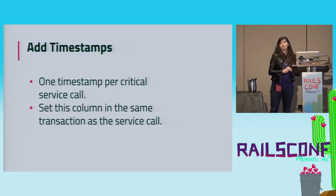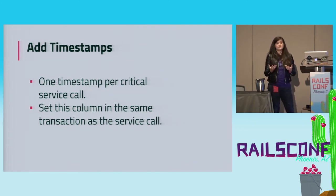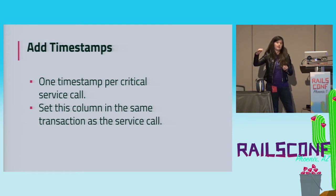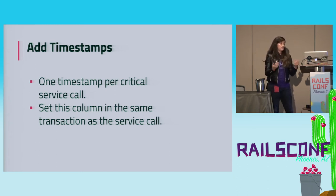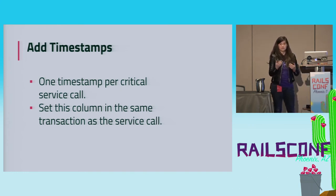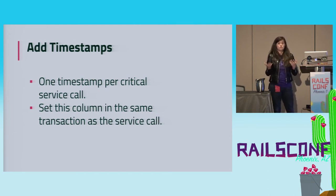Next, add timestamps — one timestamp to an object for every critical service call. For a product you sell, you might want to consider adding billing_start_time and billing_end_time. Set that field in the same transaction as you call the downstream service. If the downstream service fails, it raises an error you choose not to catch, which exits the transaction and results in that timestamp not being set. If the timestamp is not set, you know the call never succeeded and you should be able to retry if it is safe to do so.